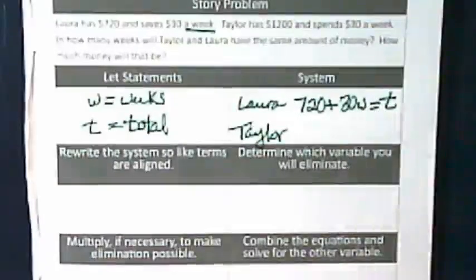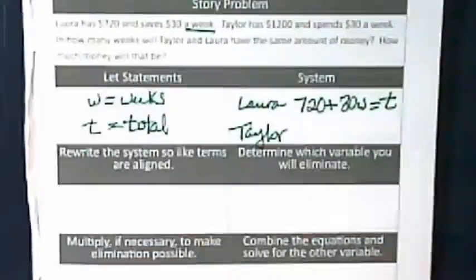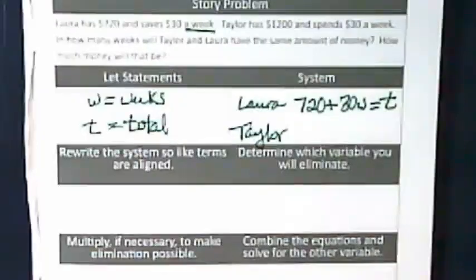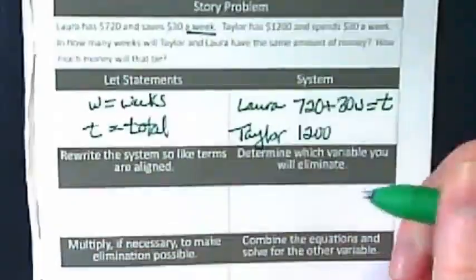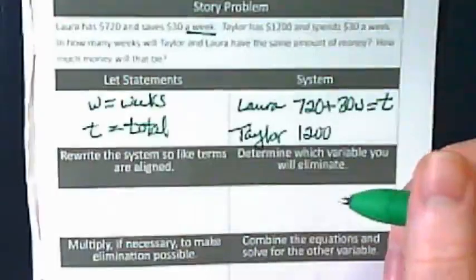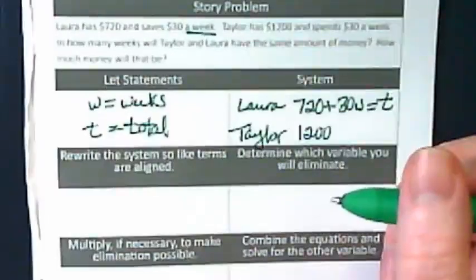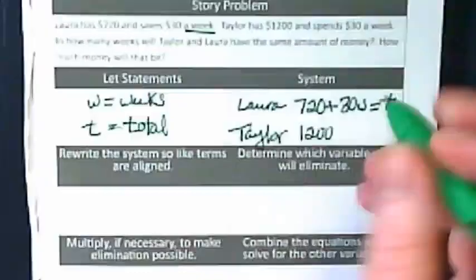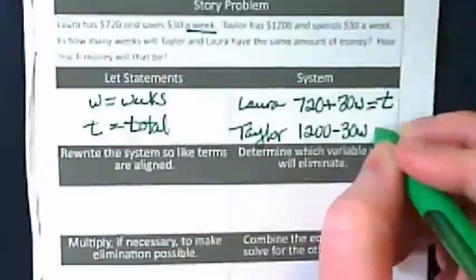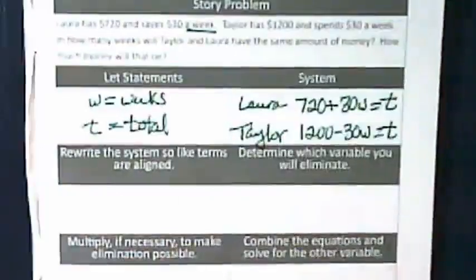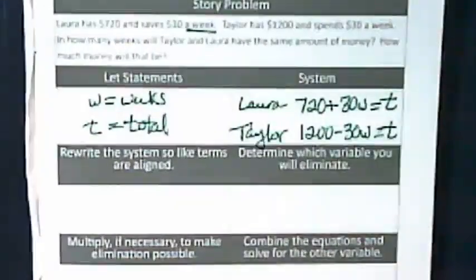So what do we think Taylor's equation is going to be now? Taylor's starting at $1,200. Adding or subtracting?